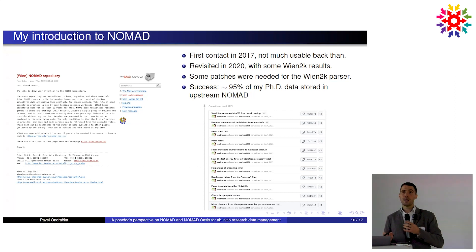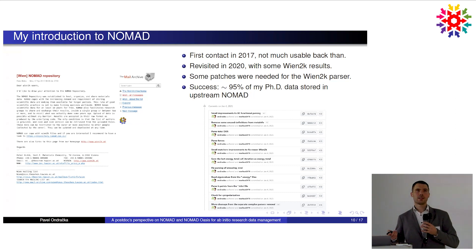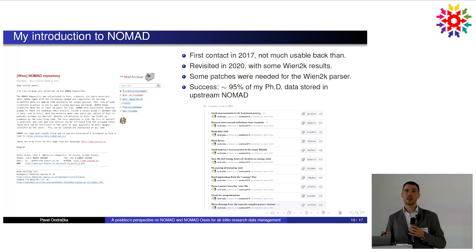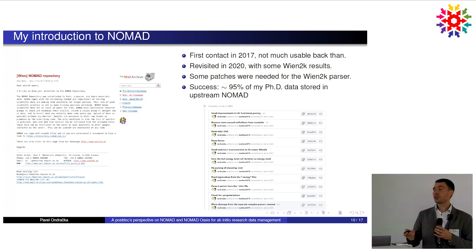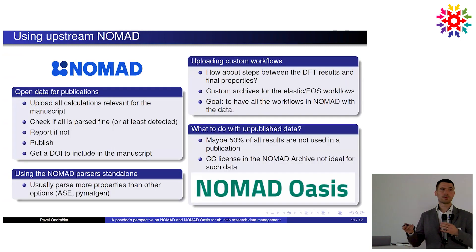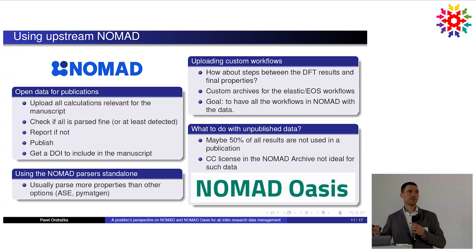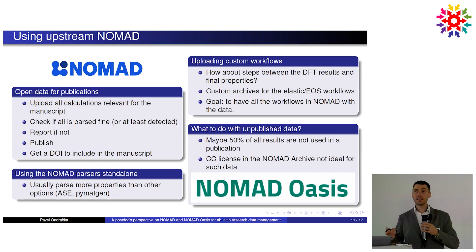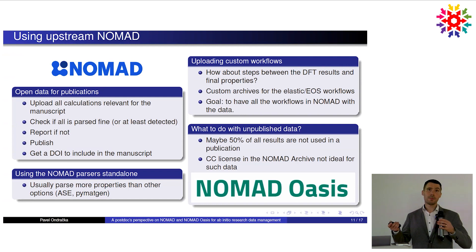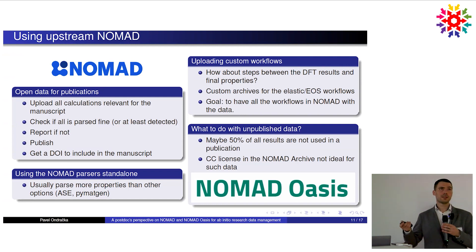I was really happy with the general NOMAD workflow and realized that it's quite easy to get patches accepted and to contribute. From that point on I started using NOMAD for all my publications — all DFT calculations get uploaded to NOMAD. I check if everything is parsed correctly; if not, I try to communicate with the developers or send fixes if possible, to make sure everything is at least matched and detected and can be included in the dataset. Then I get the DOI and put it into the manuscript — that's the standard way to use NOMAD.